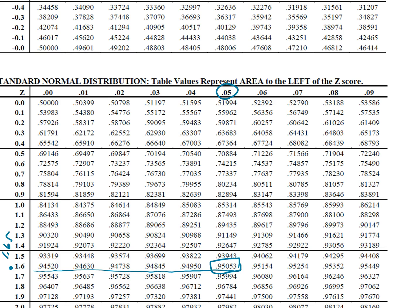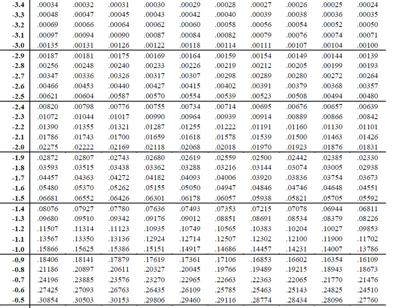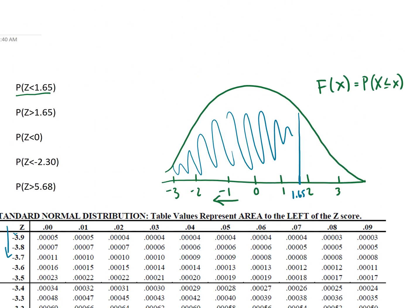So that means that the area that falls to the left of 1.65 is 0.95053. So if we scroll back up we know that this is equal to 0.95053. So right here this is 0.95053 and that seems to make pretty good sense. That is quite a bit, a large portion of the data.